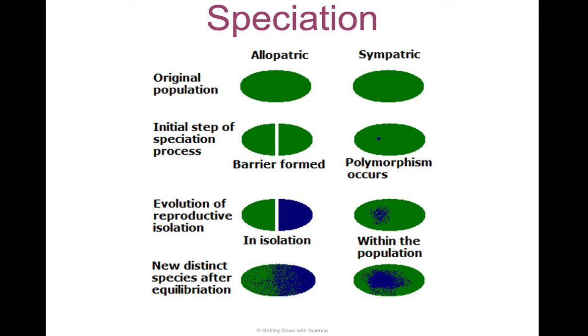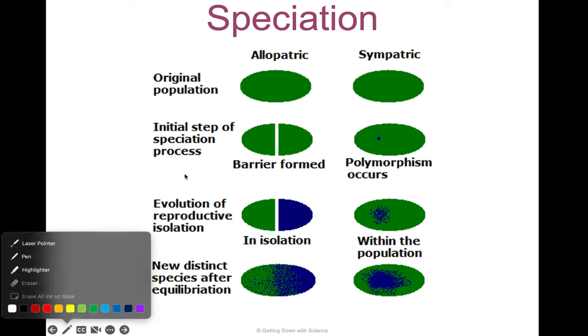Here's how it looks visually. You can see on the left-hand side allopatric speciation — there's that green oval representing the original population.